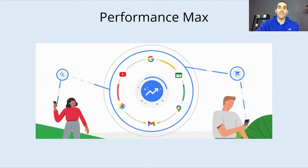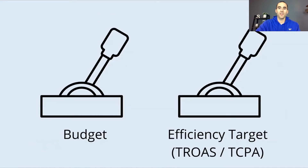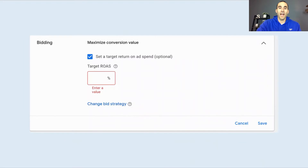That is especially the case in the heavily automated Performance Max campaign, where there are two very important levers we have to control to get the results we want. The first one is budget — how much are you willing to spend on a particular campaign? The other one is the efficiency target, which for a lot of us is the target ROAS, or target return on ad spend, or target CPA, or target cost per acquisition that we're attempting to achieve. When you're inside Performance Max, you'll see it in the bidding settings, where you have the ability to set a target return on ad spend — it's listed as optional — and you simply input your target. But the question is, what number should you input?